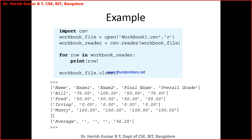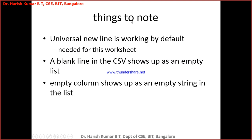Things to note: if a row is empty in a CSV file it will be displayed as an empty list, and if a column is empty it will be displayed as an empty string when you're trying to read from the CSV and print. A blank line in the CSV file shows up as an empty list, and similarly an empty column in the CSV file will show up as an empty string in the list. These are the two things you have to remember.